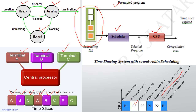This is how a time-sharing operating system works. The scheduling policy used here is known as round-robin scheduling. That is, first process A executes, then process B, then process C. Once the cycle is over, A can execute again, then B, then C. This goes in a round-robin fashion, so the scheduling policy is called round-robin scheduling.